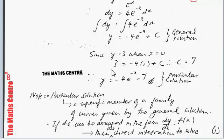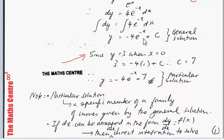We are asked to find the particular solution given that y = 3 when x = 0. Plugging in those values: 3 = −4·e^0 + c, so 3 = −4 + c, giving c = 7. The particular solution is therefore y = −4e^(−x) + 7.